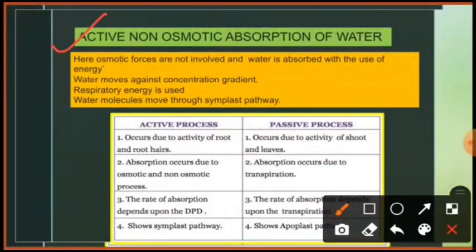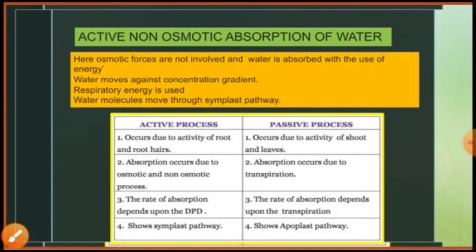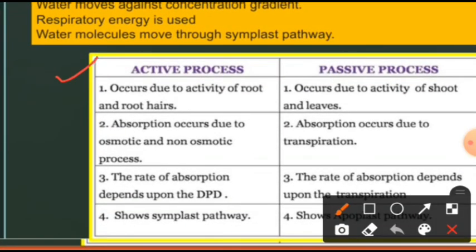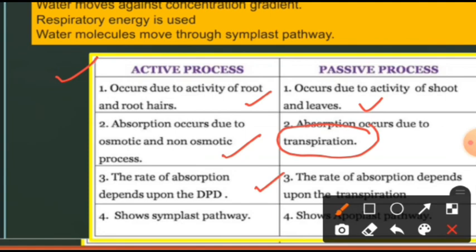In non-osmotic absorption, water is absorbed against the concentration gradient — from low to high — using respiratory energy. The symplast pathway is followed for this water movement. Here I have taken a table where the main difference will be clear between active and passive absorption. In active absorption it occurs due to the activity of root and root hairs, while passive absorption depends on the shoot and leaves.